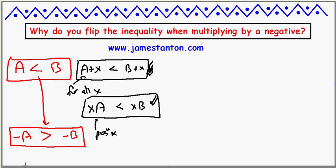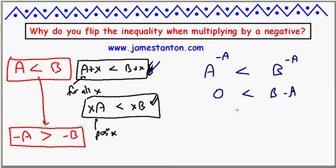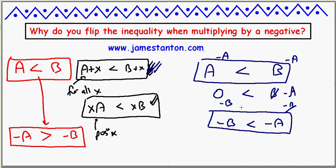If I believe rule number one, let's see what happens. A is less than b. By rule number one, no matter what I add to both sides — positive or negative — it still has to preserve the inequality sign. So I'll be sneaky: I'm going to add negative a to both sides. If I believe that rule, that means zero is less than b minus a. And now, if I add negative b to both sides, which according to this rule I believe still preserves the inequality sign, I'll see some nice things happen: negative b will be less than negative a. That's it. That's pretty easy — subtract a from both sides, subtract b from both sides.